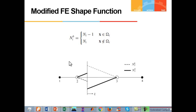Earlier models used a simple modified finite element shape function of the form where Ni is the conventional finite element shape function and Ωi is the part of the element in between the crack and node i. The figure shows how this jump enrichment can affect the shape function for the simple one-dimensional problem. One problem with this type of jump function is that it provides similar strain fields on both sides of the discontinuity.